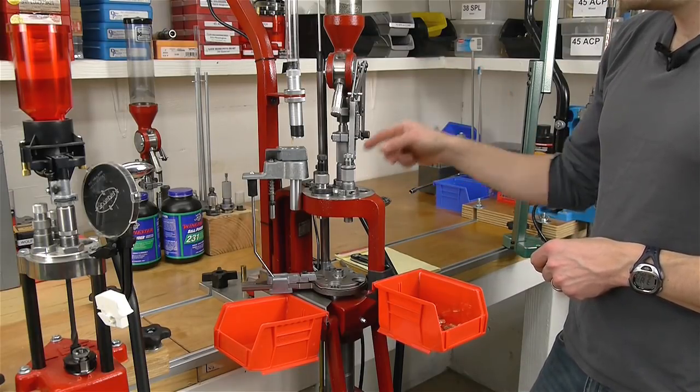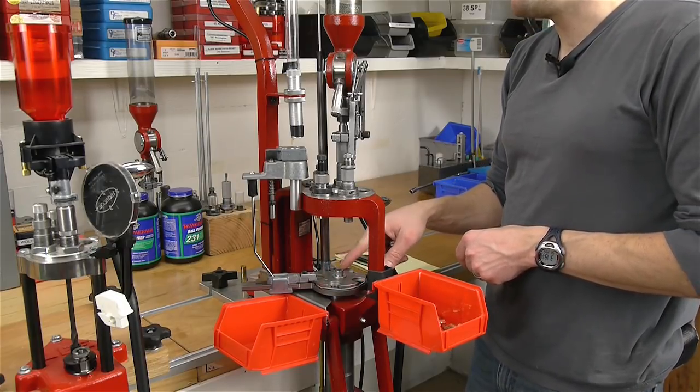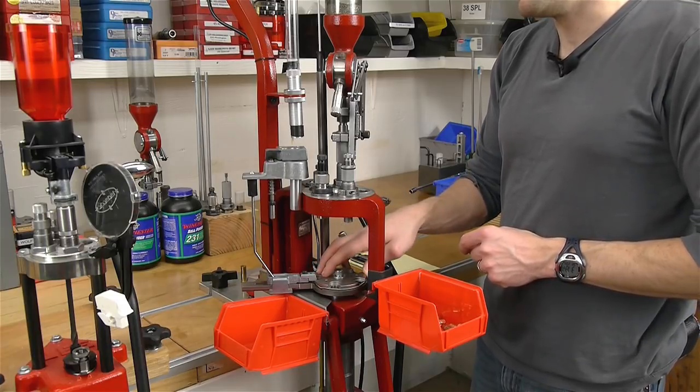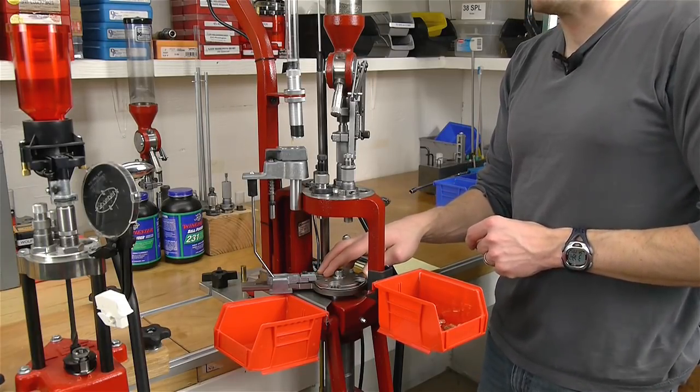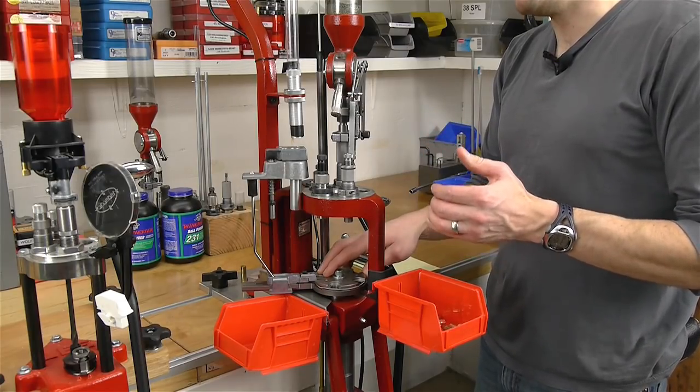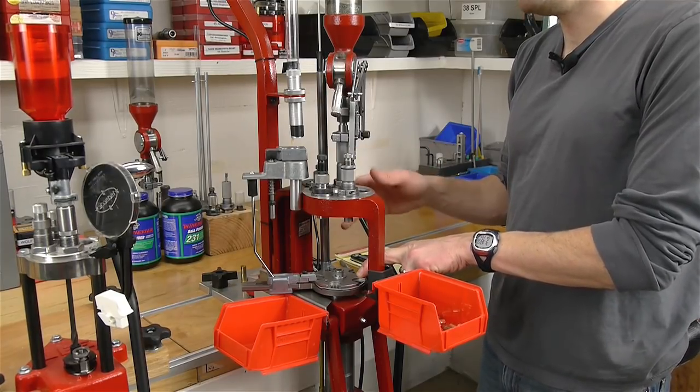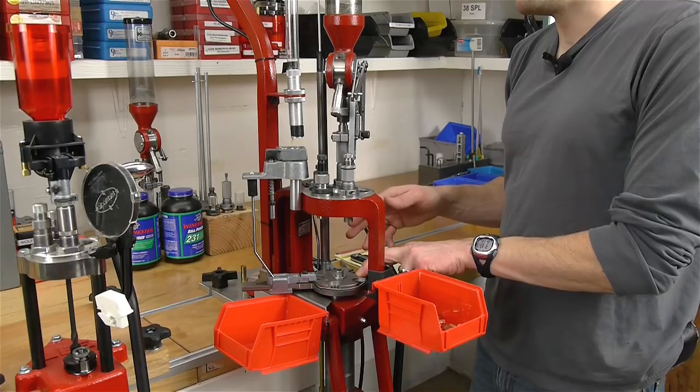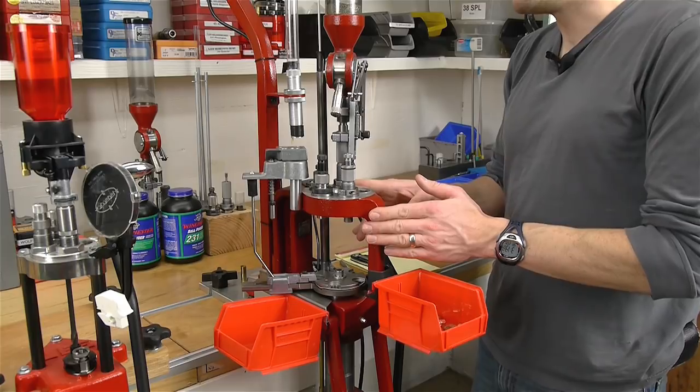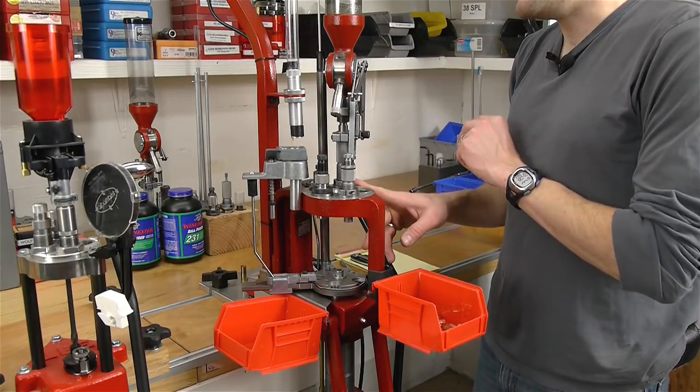That means on the bottom instead of having a shell holder like we have on the turret and like we have on the single-stage press, we've got a shell plate. The shell plate has typically four, five, or even seven stations depending on the press. This is a five station. Here on ultimatereloader.com we've got HD videos of all four of the popular five station progressive reloading presses, including the Hornady Lock-N-Load AP which we're taking a look at here, the Lee Loadmaster, the Dillon XL 650, and the RCBS Pro 2000.